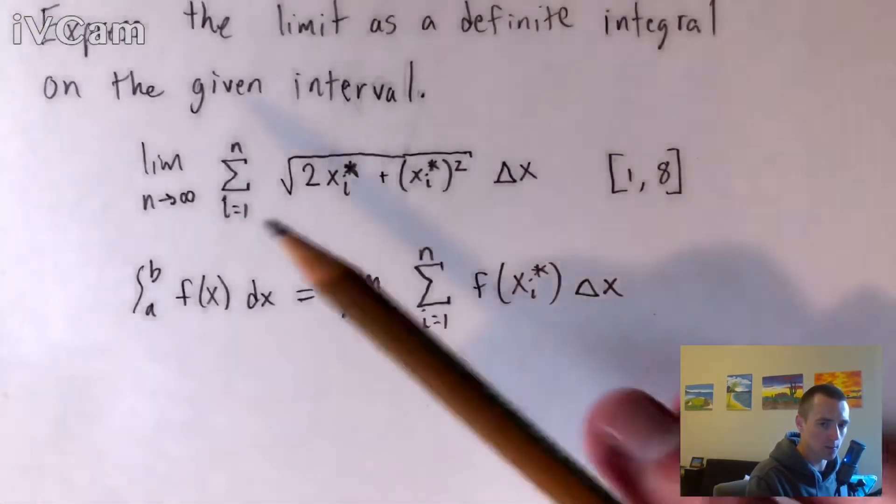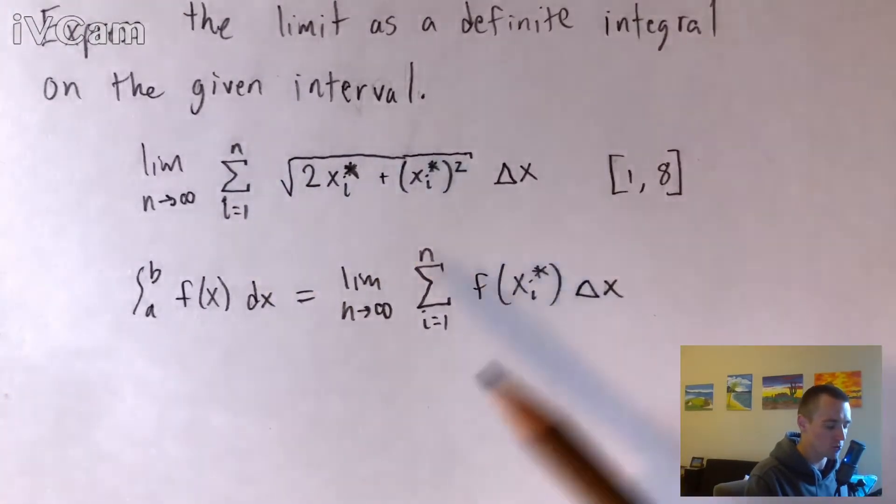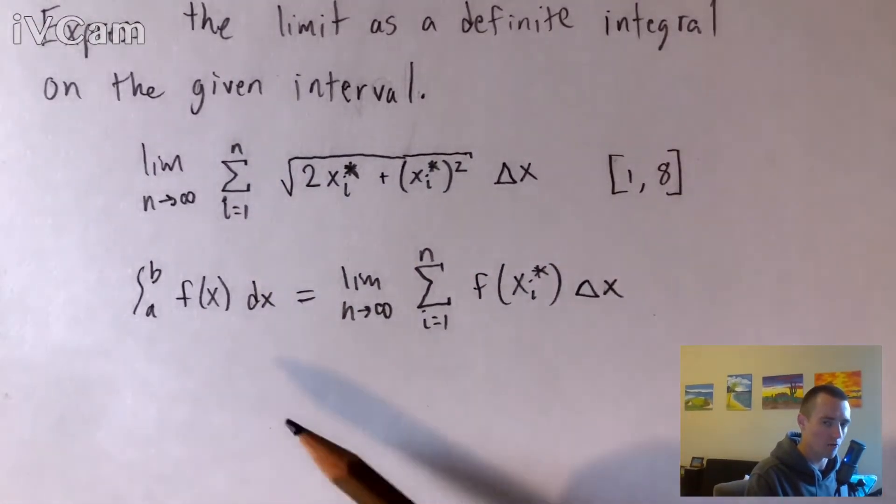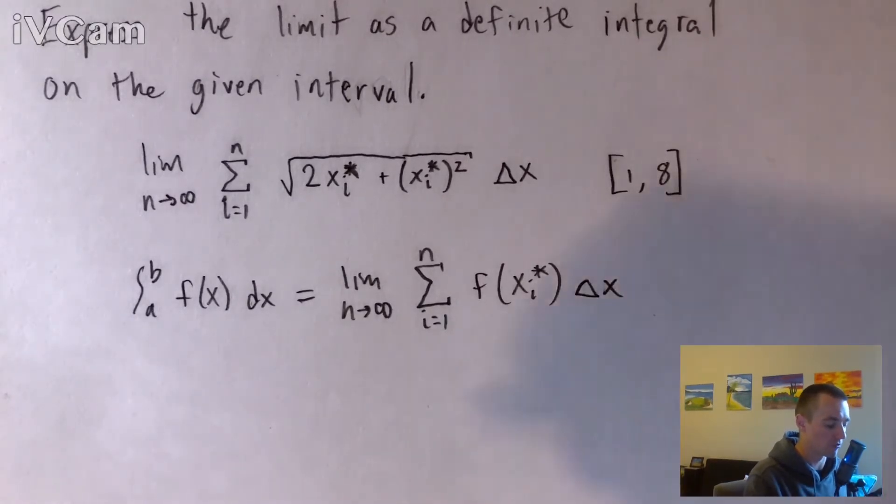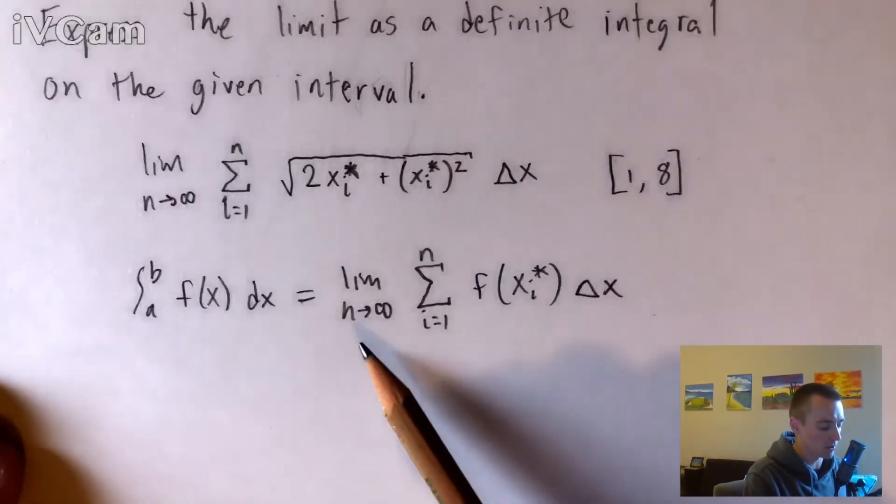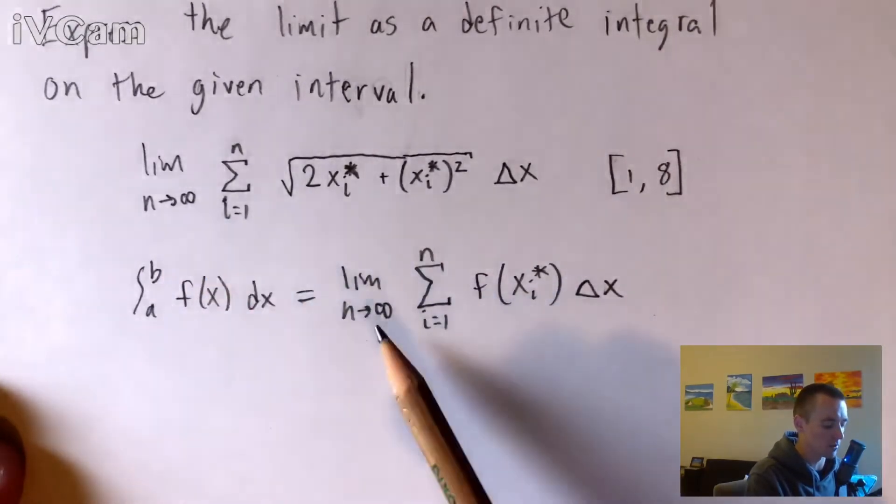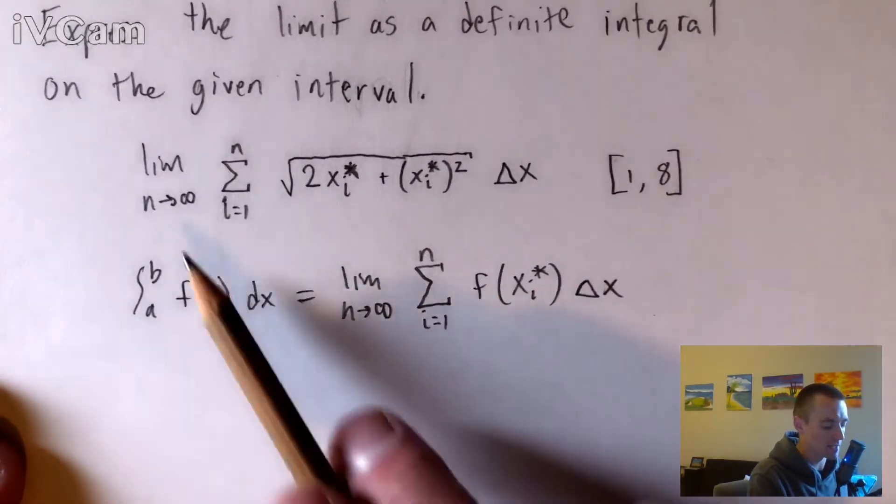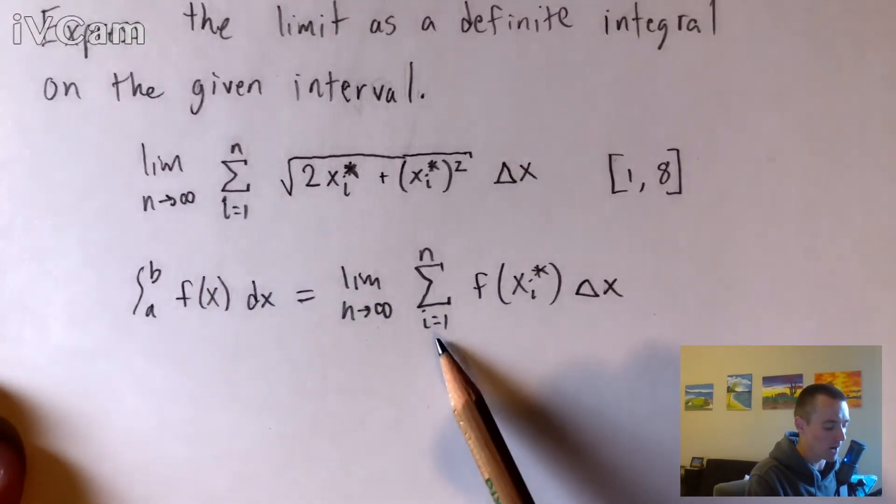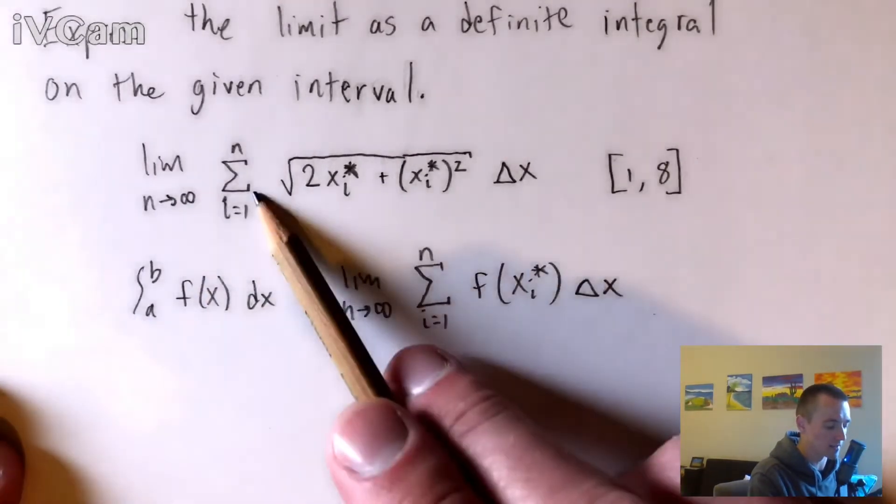we're just going to compare this limit that we were given to this limit definition of a definite integral and kind of match up the pieces so that we can convert it to this other format. So we can see pretty clearly here that we have the limit as n goes to infinity. That's obviously the same in both of these limits. And then we're taking the limit of a sum from i equals 1 to n, and that's the same in both of these.